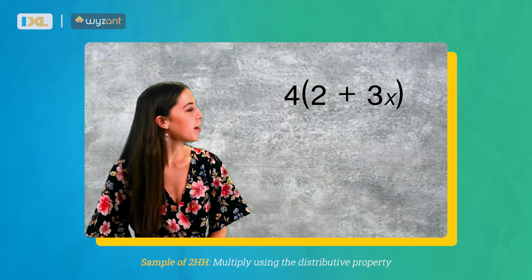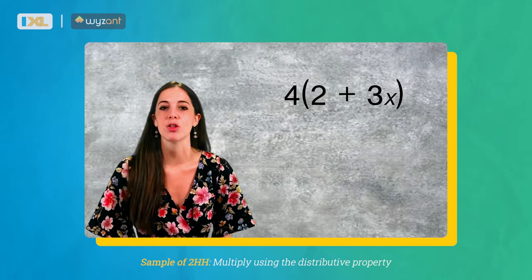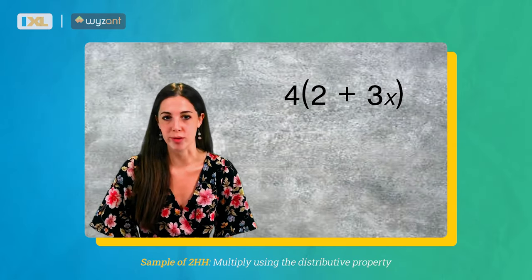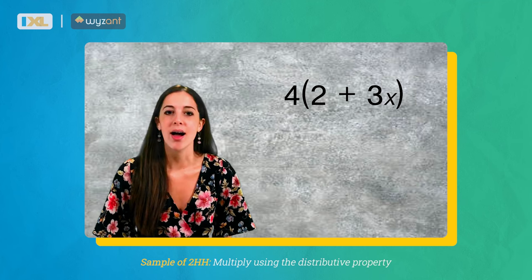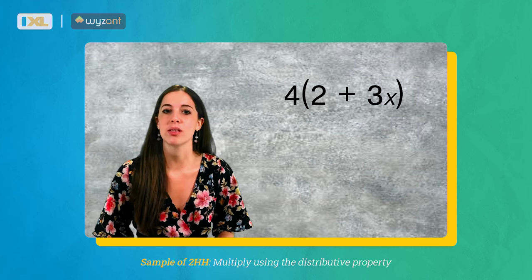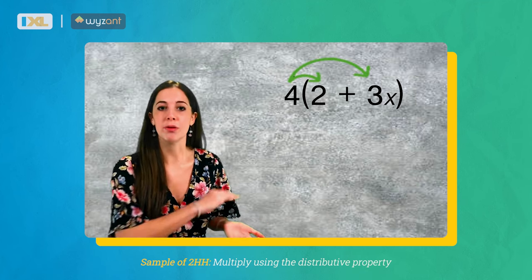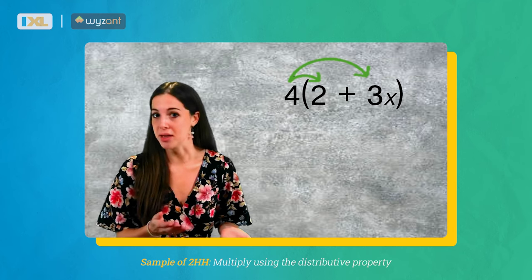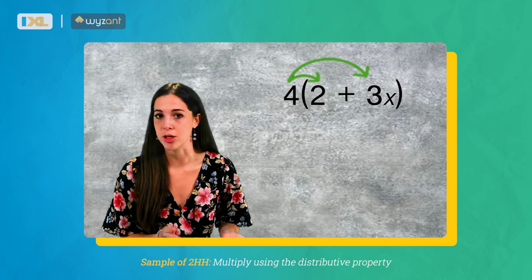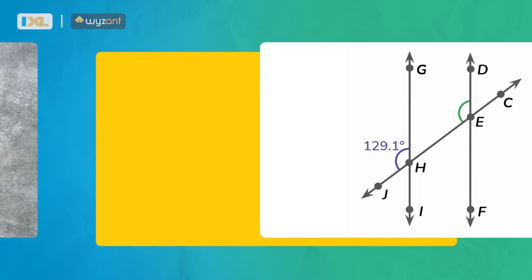We have 4 parentheses 2 plus 3x. I'm going to take what is on the outside, my 4, and distribute it by means of multiplication to each term.